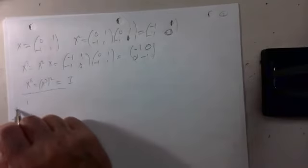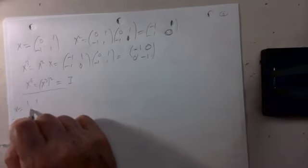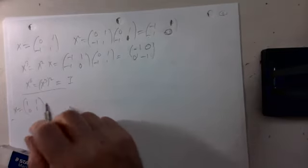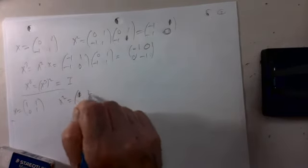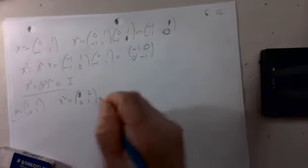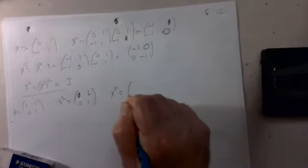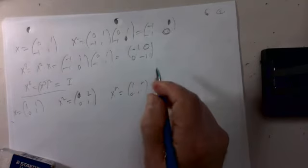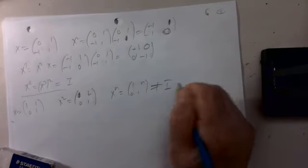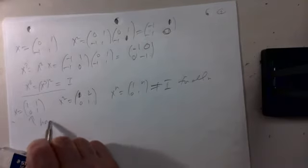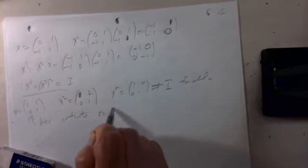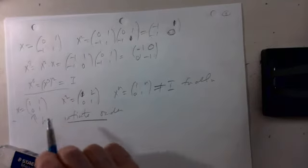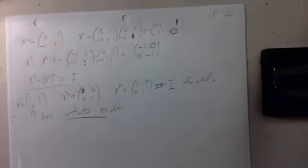The last matrix is x equals one one zero one. x squared is one two zero one; in general x to the n is one n zero one. This is never the identity for any positive n, so this matrix has infinite order — no finite power gives the identity.